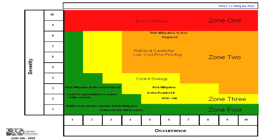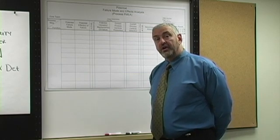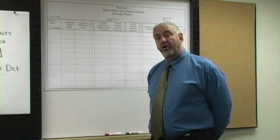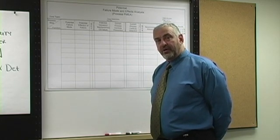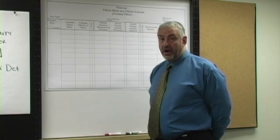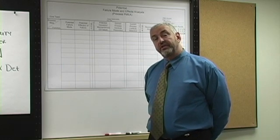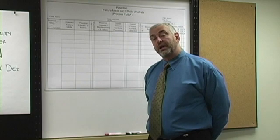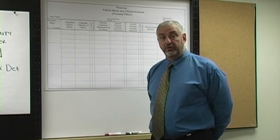So already, I've gone after high severity, nine or ten, gone to the action column and see if I can eliminate the failure mode. Very difficult to do, I might add. I've also tried to reduce the occurrence of any particular cause by either error-proofing it or in this case, in a design FMEA, can I do something in collaboration with the supplier or collaboration with the manufacturing people to get good capability.